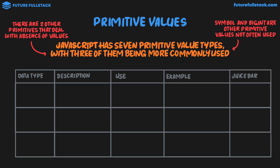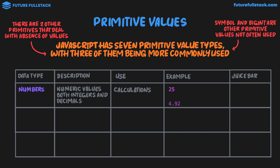I'm going to go through them in this table. The first data type is numbers — numeric values which are both integers and decimals, used in JavaScript for calculations. Some examples include the number 25 or 4.92. In our juice bar analogy, numbers are like fruit — there are all different kinds like apples, bananas, and pears, just like there are an infinite number of numbers we can use in JavaScript.